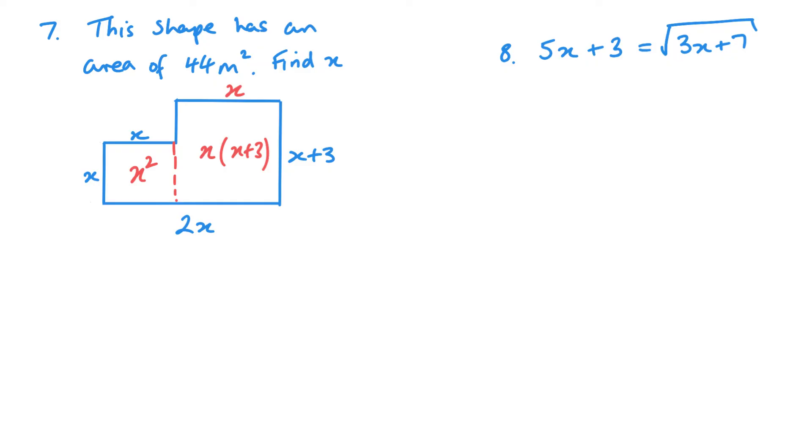I can expand. x squared plus x, x plus 3. That area is one rectangle plus the other, or a square plus a rectangle. That's going to equal 44. We've got x squared plus x squared, 3x minus 44. I'm going to get everything to one side. 2x squared plus 3x minus 44 equals 0.